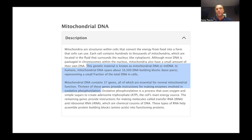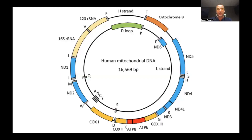As you can see, if there's any damage to the mitochondrial DNA, that can cause major problems for energy production, which then causes major problems for our cells, tissues, organs, etc. This is just a picture of what the mitochondrial circular DNA looks like. There are several different gene fragments here that get encoded for RNAs and then later proteins.